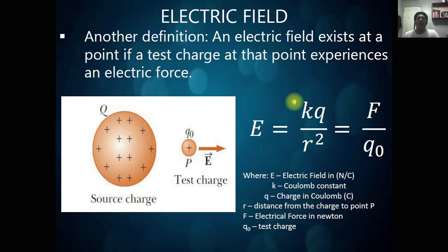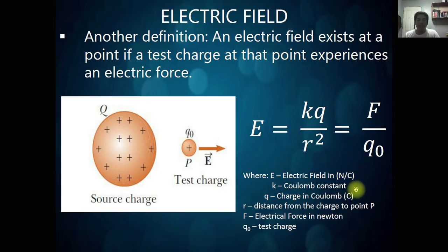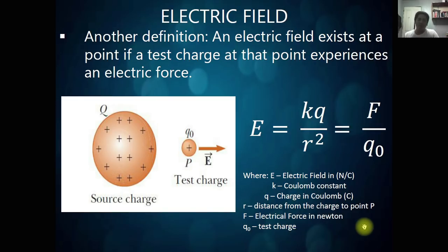The formula for electric field is E equals KQ over R squared, or force per unit test charge. E is our electric field, and the unit is Newton per Coulomb. K is the Coulomb's constant, which is 9 times 10 raised to 9 Newton meter squared per Coulomb squared. Q is the charge in Coulombs, and R is the distance from the charge to point P where the electric field is to be calculated. F is the electrical force in Newtons, and Q sub O is the test charge.